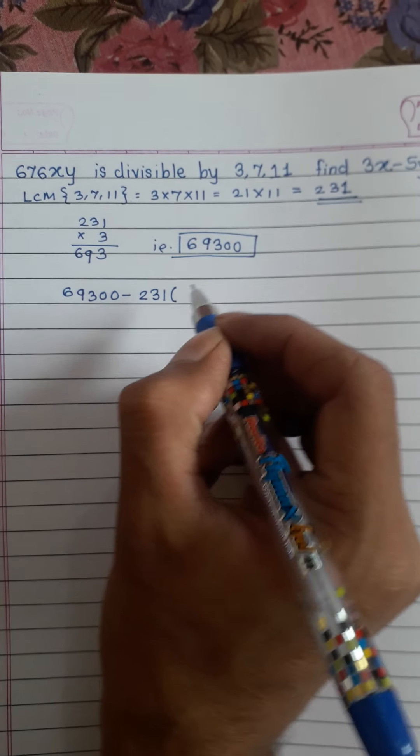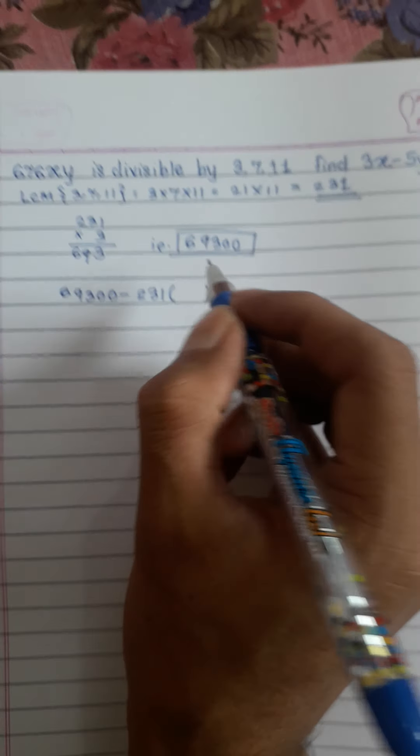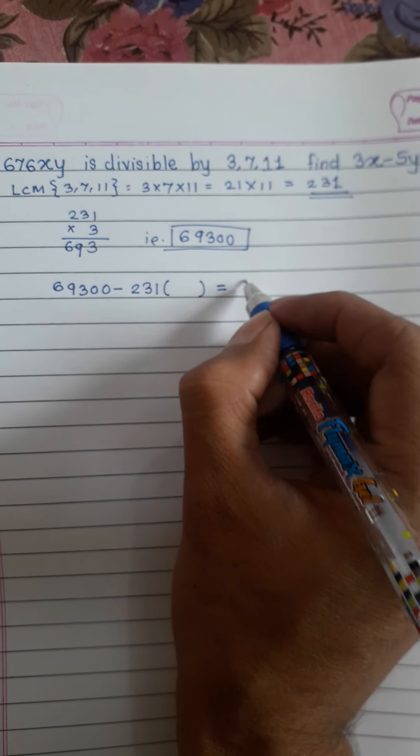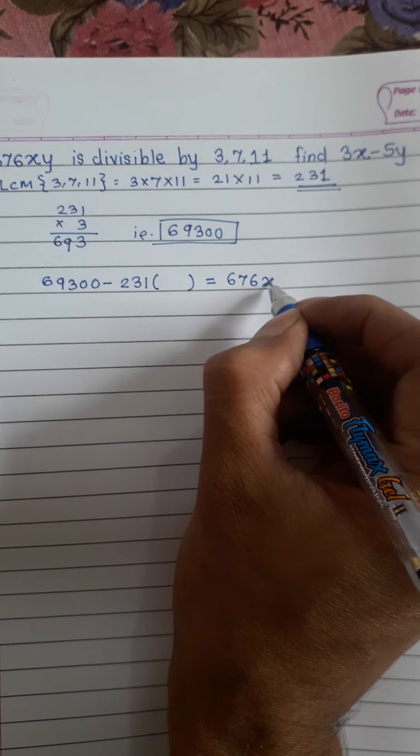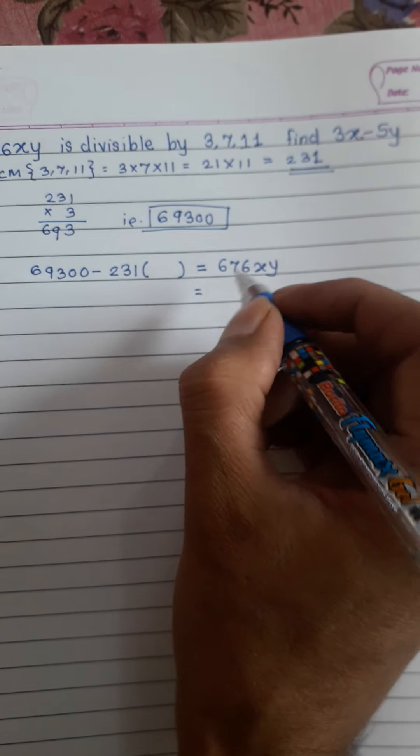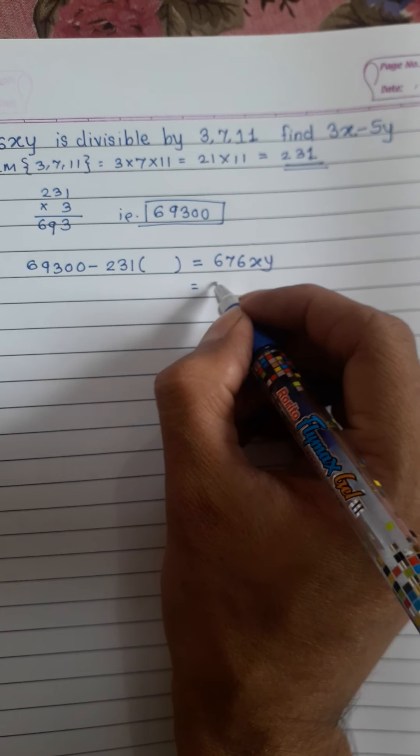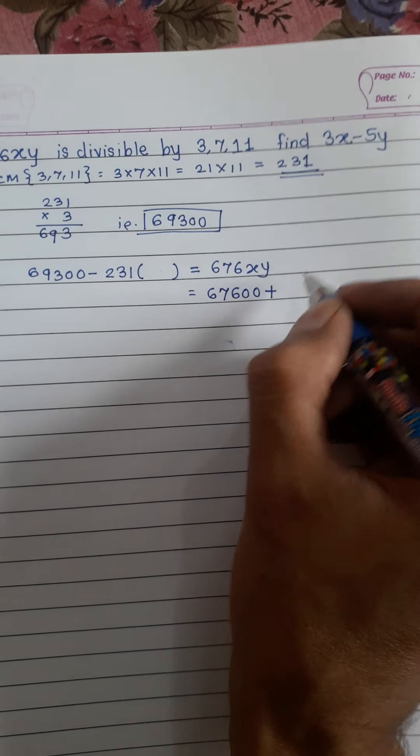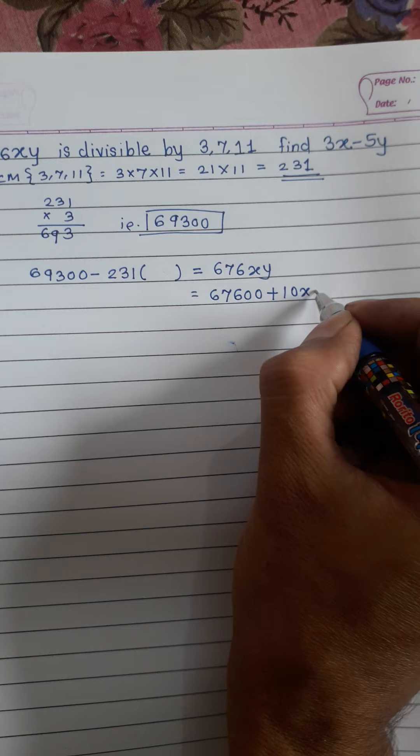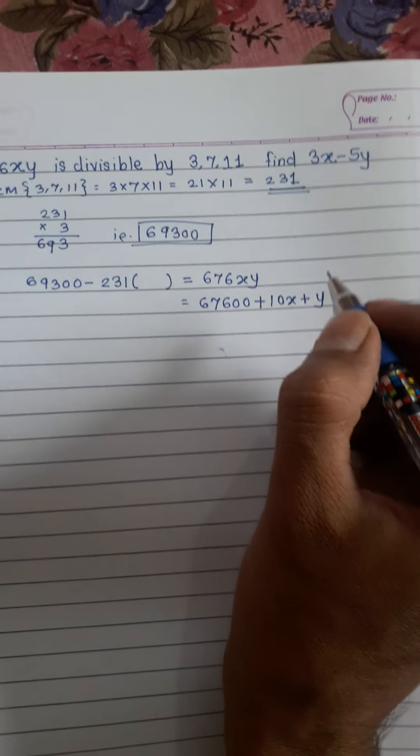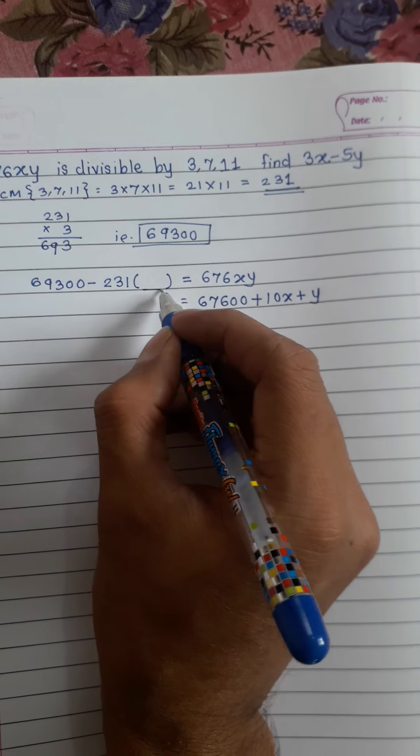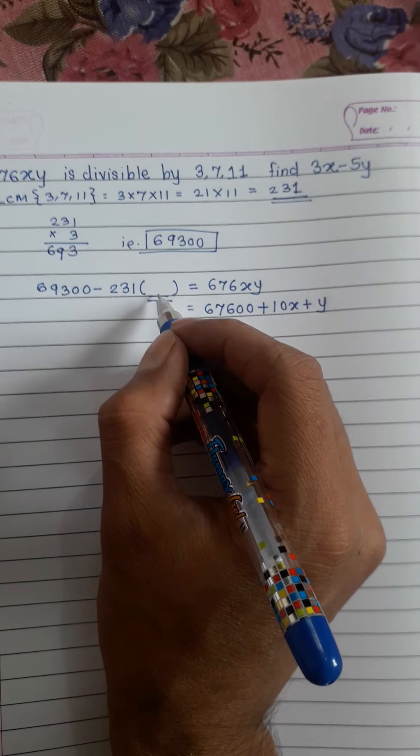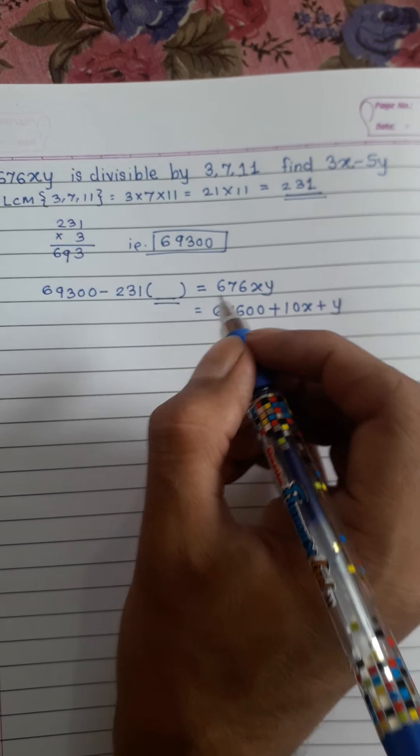231 is equal to this number 6 7 6 XY. We can write this number as 6 7 6 double 0 plus 10X plus Y. So we want to find this multiple, then what we will